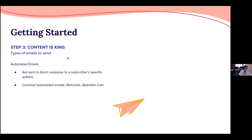The first type of email is campaigns — those you send out yourself. The second type is automated emails, sent automatically in response to a subscriber's specific action. Common automated emails include the welcome email and the abandoned cart reminder. Other automated emails include back-in-stock notifications, win-back campaigns, and browse abandonment flows. There are a lot of different options out there.